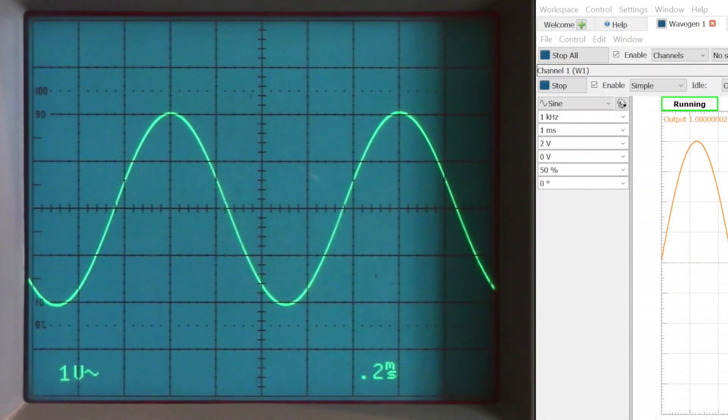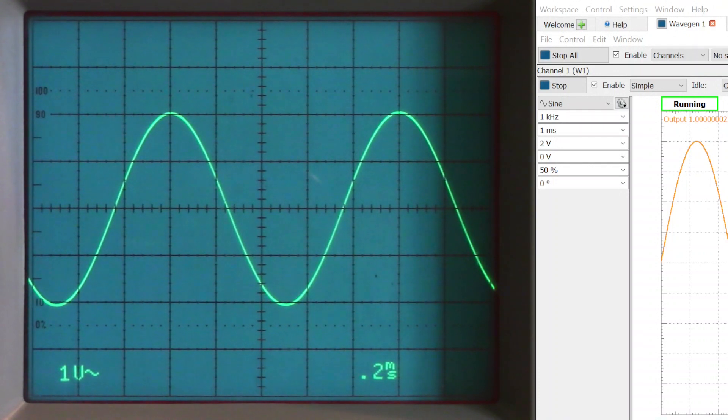This is the output of that signal generator, which, of course, is the input to the amplifier before that 1k ohm resistor, and you can see that we have 2 volts peak. Here is the output of our amplifier, and you can see that the output is approximately 1.5 volts peak, which means we haven't actually amplified anything. We've actually attenuated the signal.